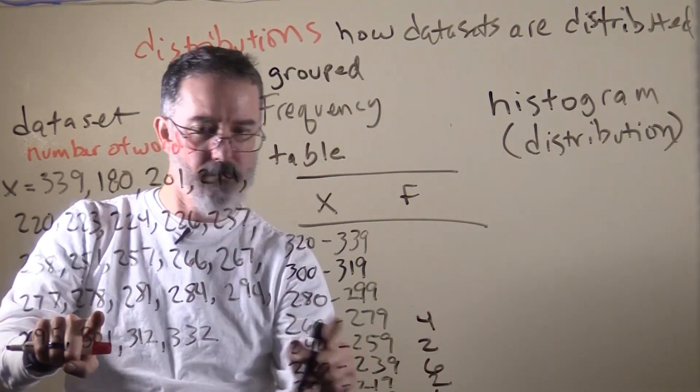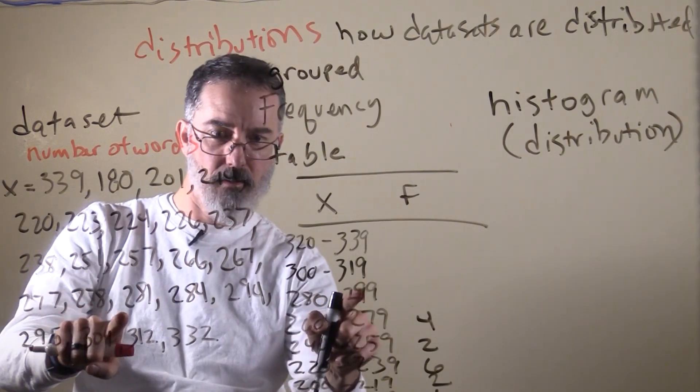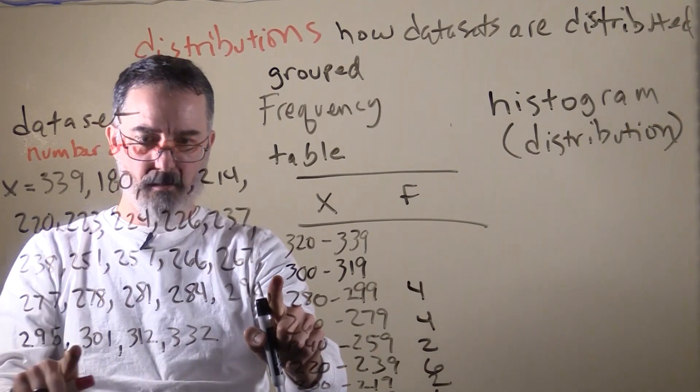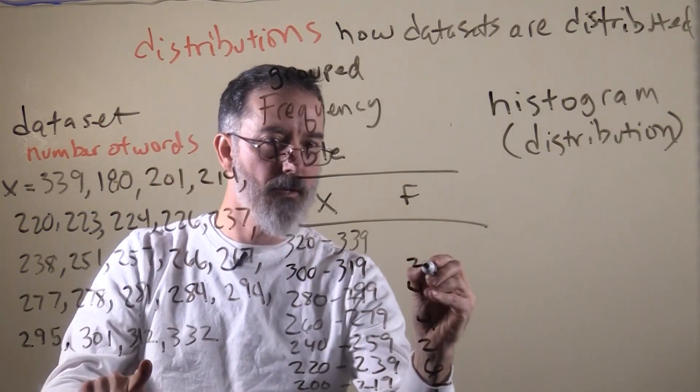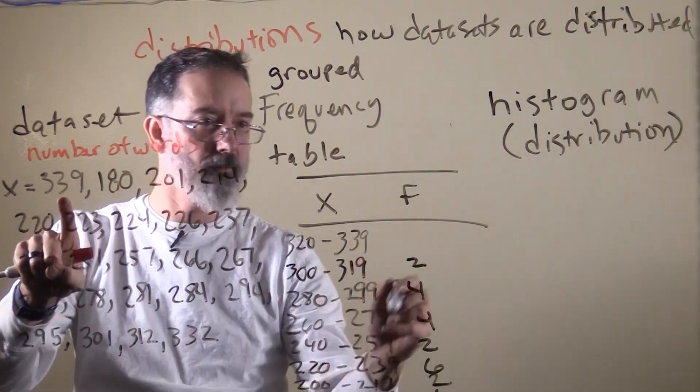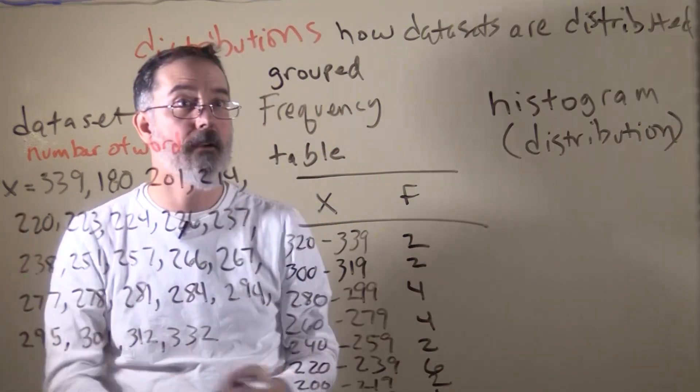Between 260 and 279, 1, 2, 3, 4. Four scores. Between 280 and 299, 1, 2, 3, 4. Between 300 and 319, 1, 2. And between 320 and 339, 1. I cannot forget this one for 2. There it is. That is our grouped frequency table.